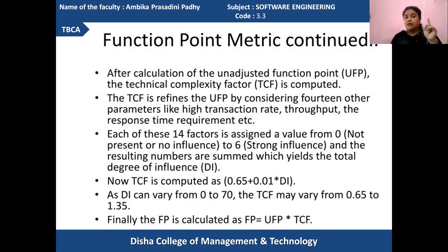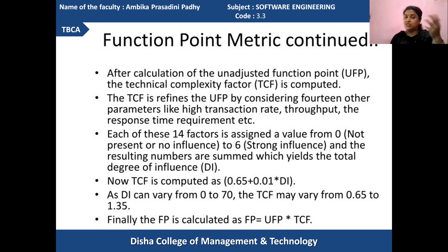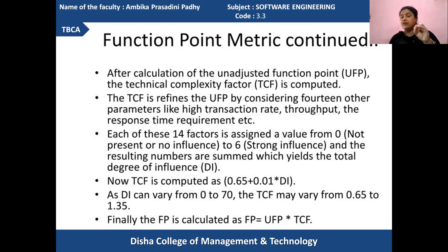If a particular specific software occurs and its influence is not there, then the influence will be zero. If a particular factor's influence is a little higher, then it will be one. If it is more higher, then it will be a strong influence — the influence will be six. Accordingly for each and every factor of software development process, whether the transaction rate is higher or lower, whether the throughput is higher or lower, according to that the degree of influence of different factors are identified.